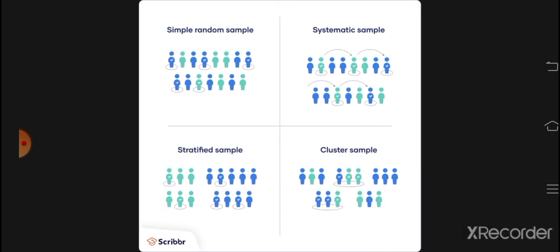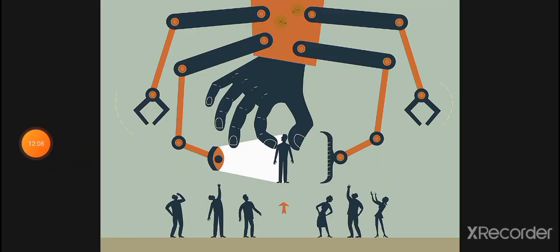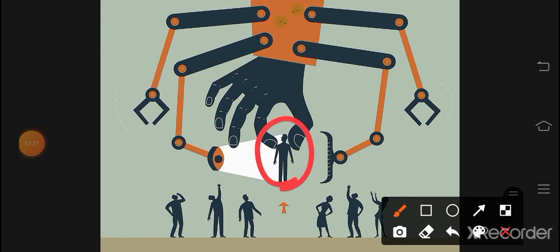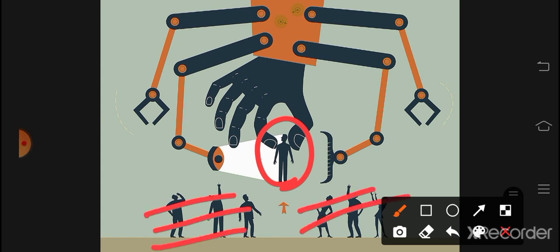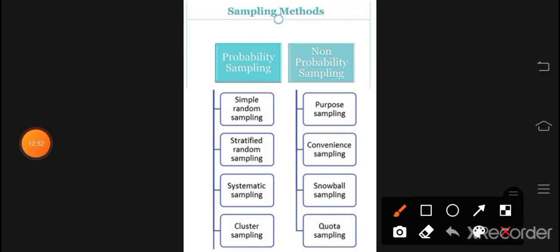Next is non-probability sampling, where everyone does not have equal chances. There is no assurance that each element will have the same chance of being included in the sample. The four types of non-probability sampling are: purposive sampling, convenience sampling, accidental sampling, snowball sampling, and quota sampling.